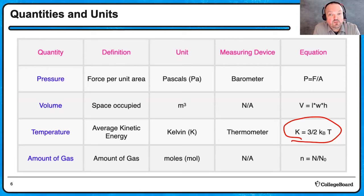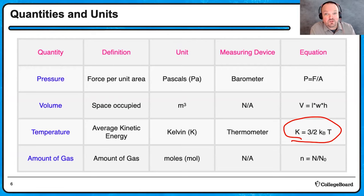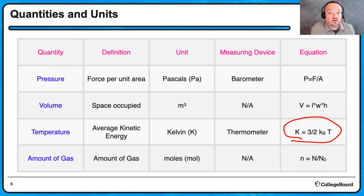Amount of gas — we measure it in moles, especially from chemistry class. That's a word for a ginormous number of things, about 6 times 10 to the 23. Little n stands for number of moles, big N stands for number of particles, and big N with subscript zero stands for Avogadro's number. So I take however many particles I have, divide by Avogadro's number, and that tells me how many moles I have.